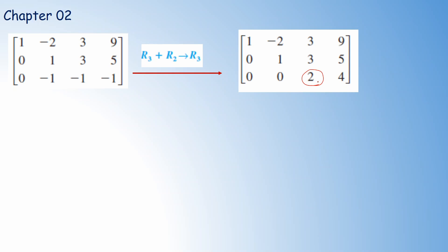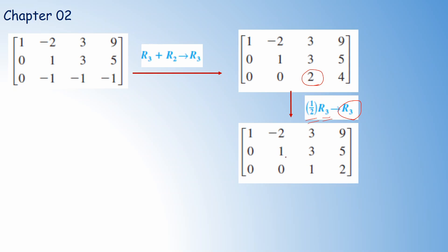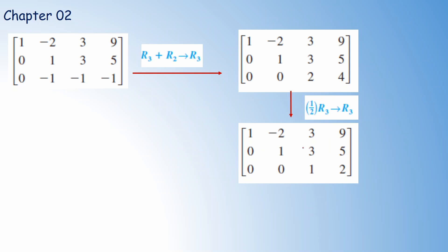To make the leading entry in the third row into 1, we multiply the third row by one-half, which means dividing by 2. The first and second rows do not change. So 2 divided by 2 is 1, and 4 divided by 2 is 2. Now we have the upper triangular form on the left-hand side of the augmented matrix, so we can stop applying row operations.